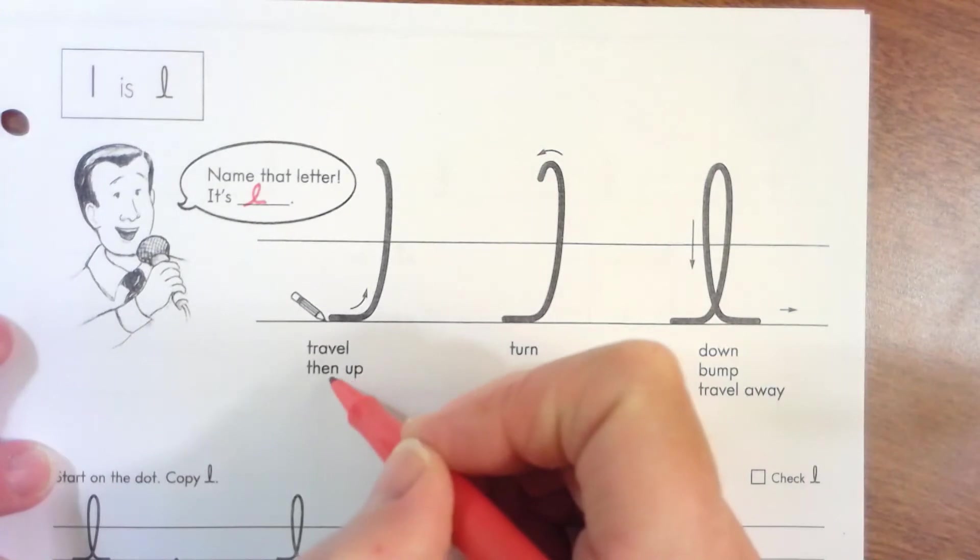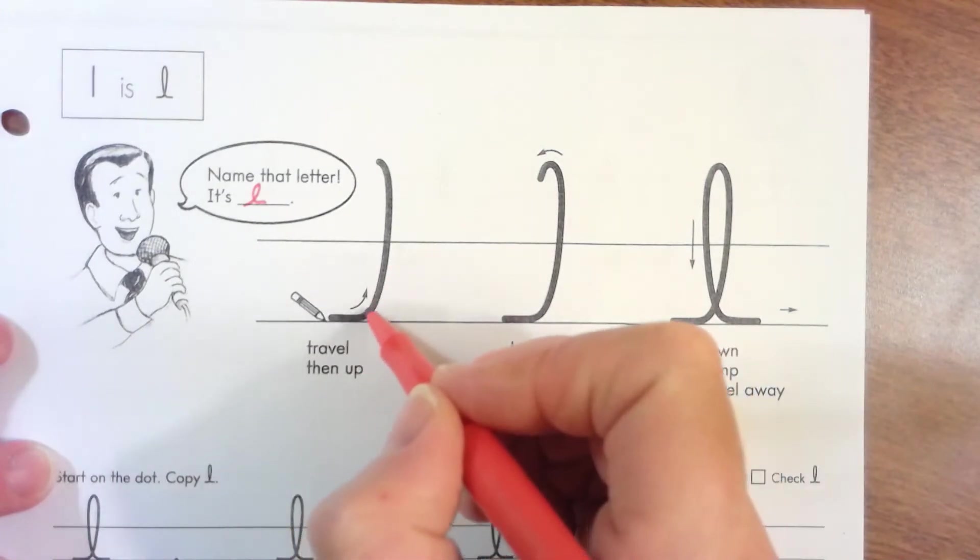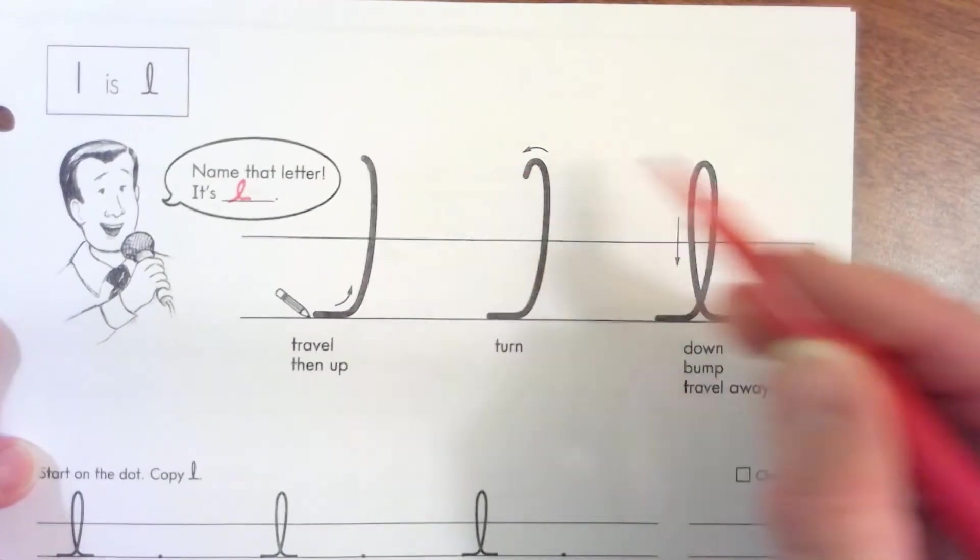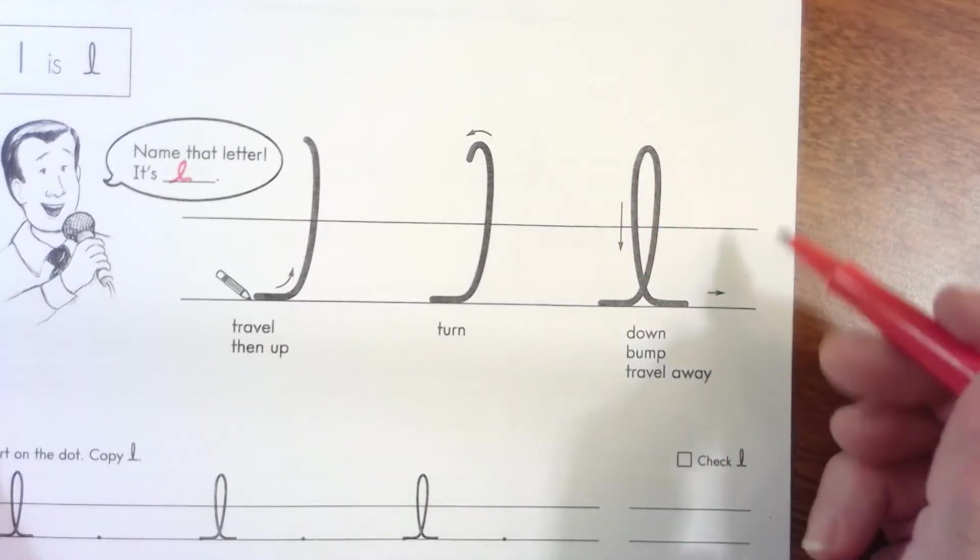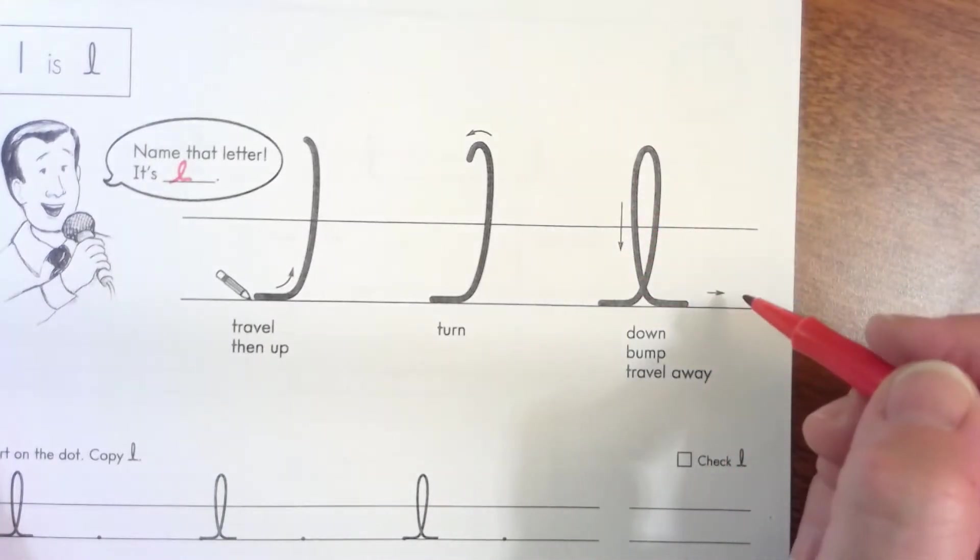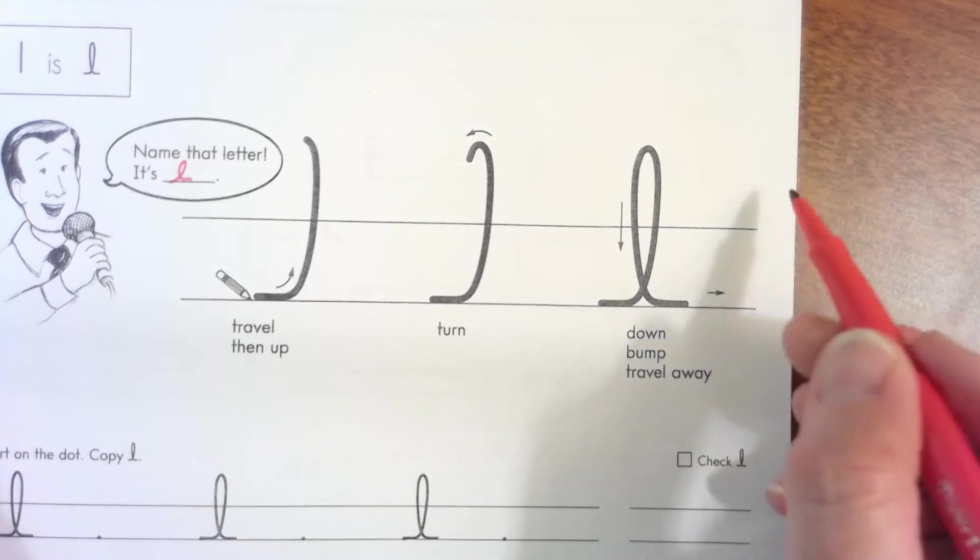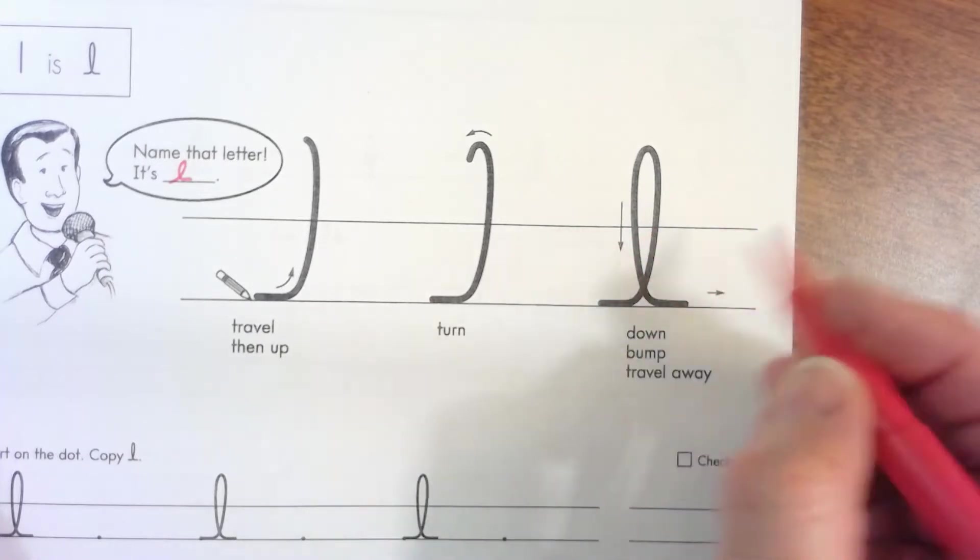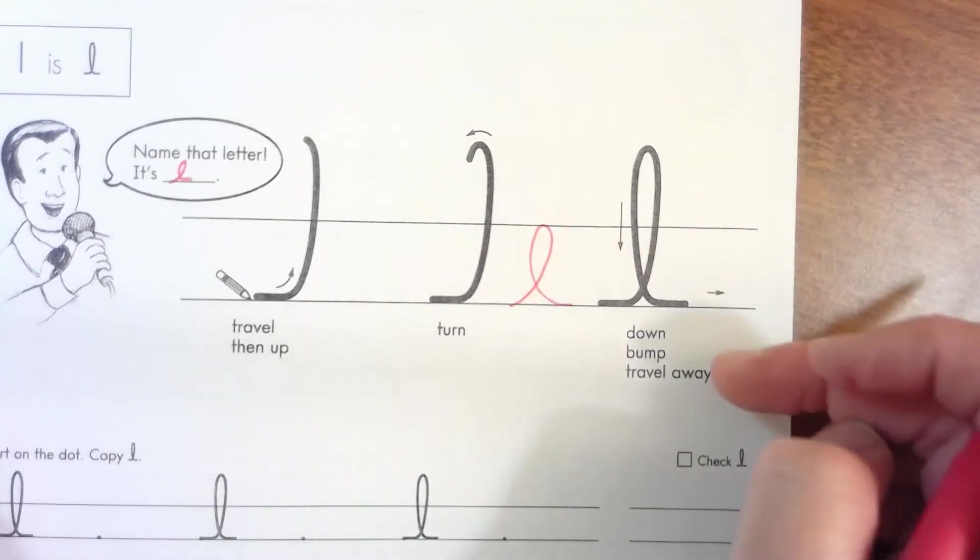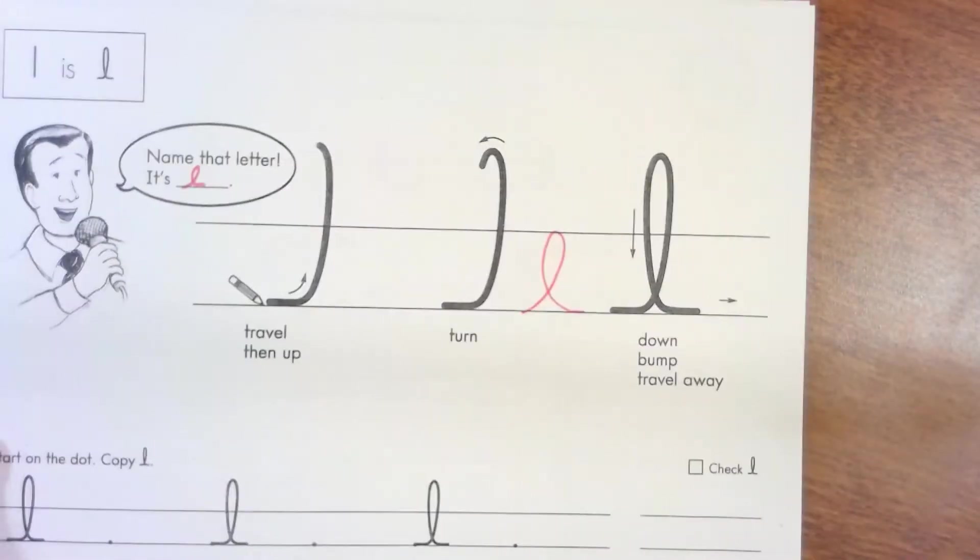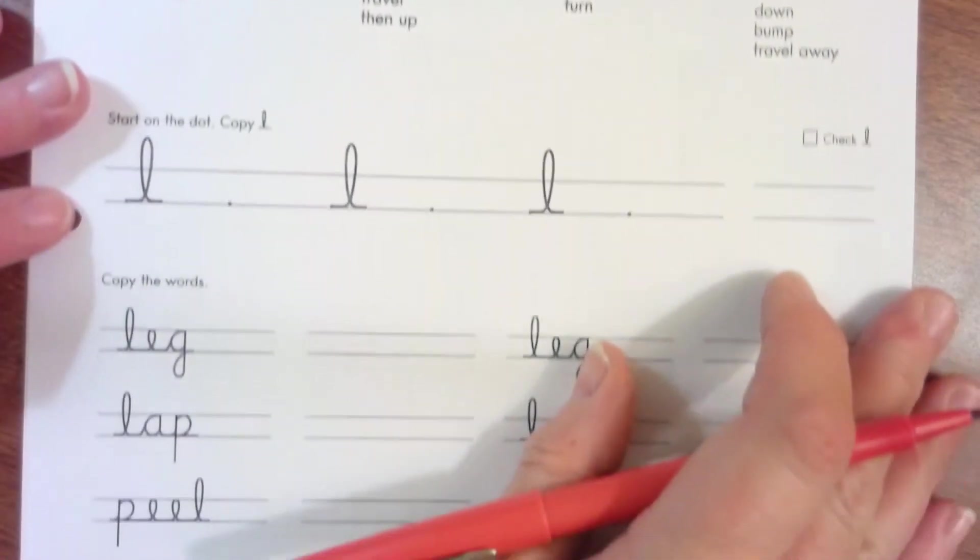They want us to travel, then up, turn, down, bump and travel away. Now that sounds a lot like an E. The difference is the E would have stopped at that line and L goes above the line, the second line.